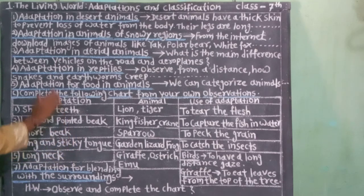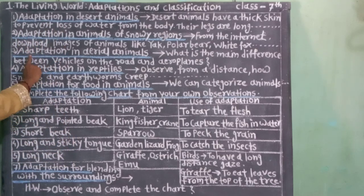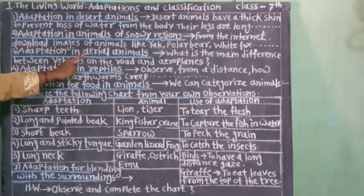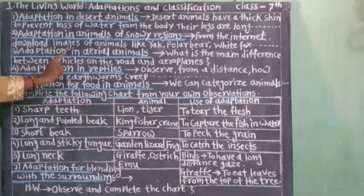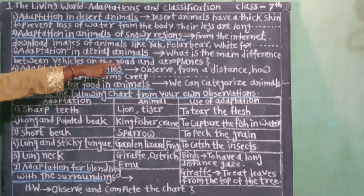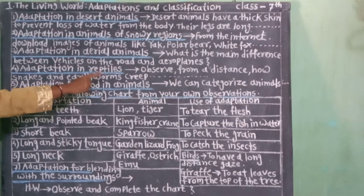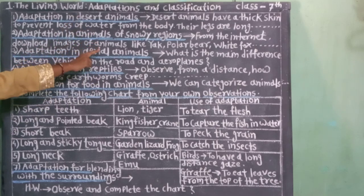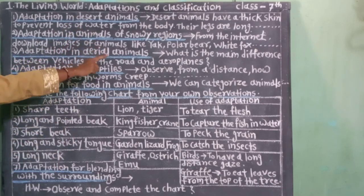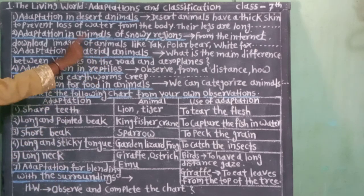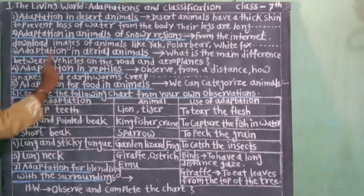The next paragraph is Adaptation in Aerial Animals. Can you tell what is the main difference between vehicles on the road and aeroplanes? Vehicles on the road do not have wings, whereas aeroplanes have wings.